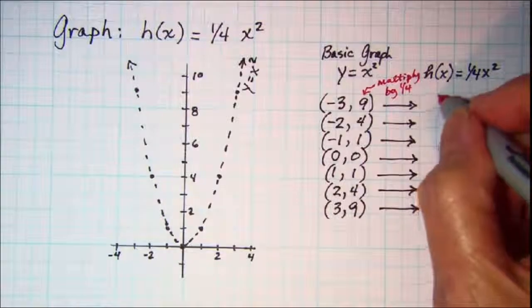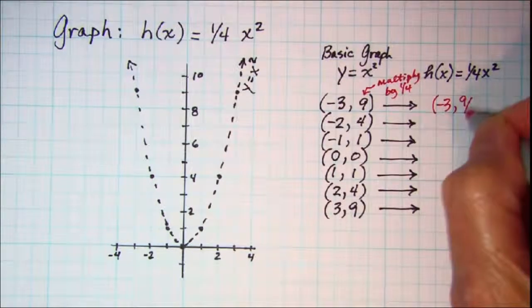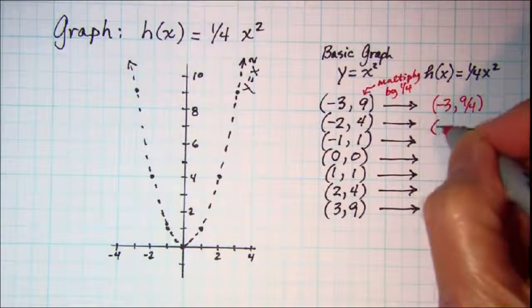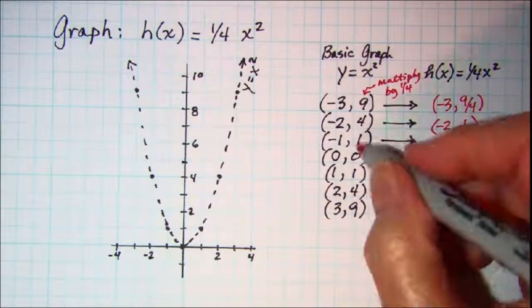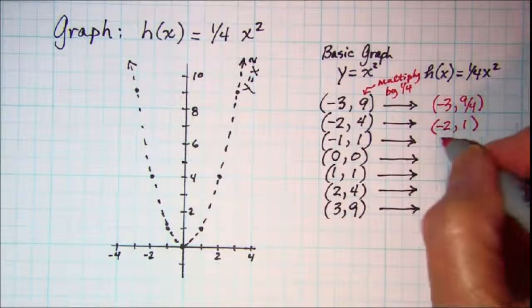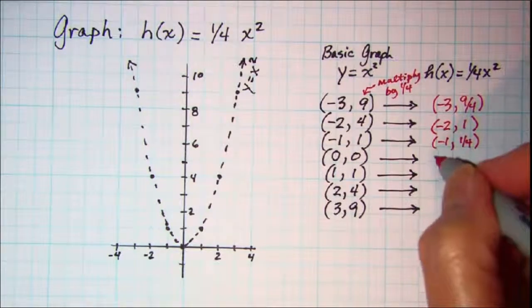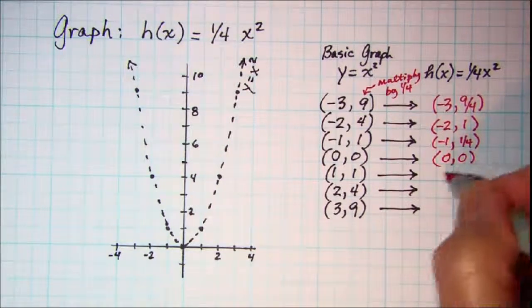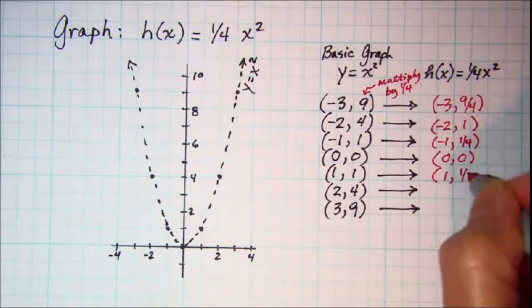So we have the points: negative 3, 9 fourths; negative 2, 1; negative 1, 1 fourth; 0, 0; and 1, 1 fourth.